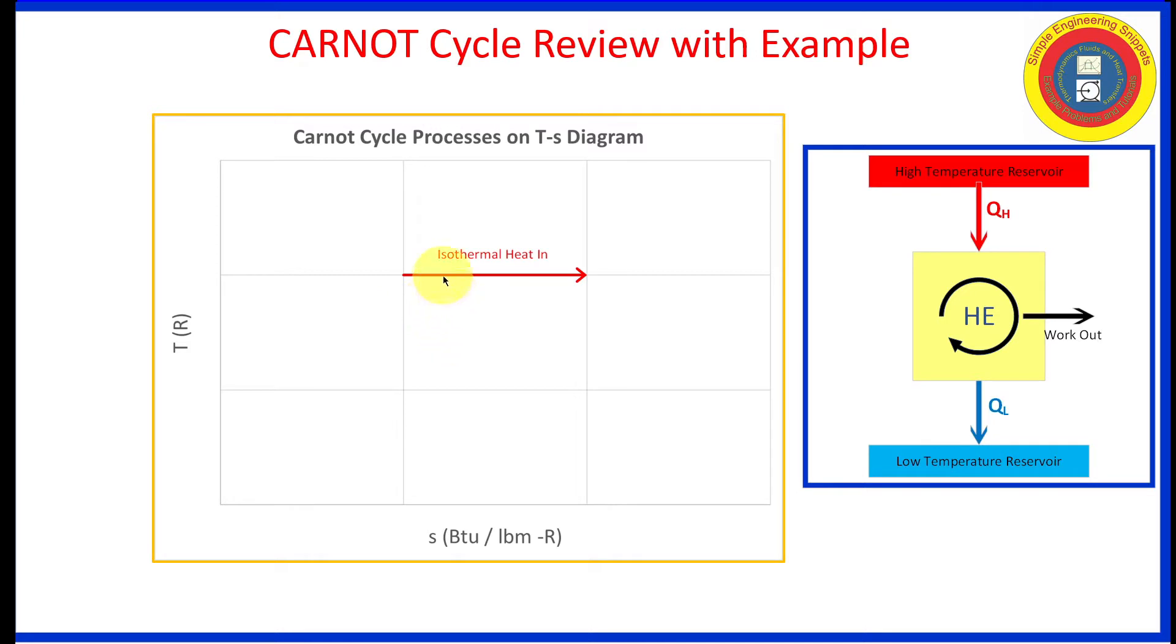TS is going to be a pretty useful type of diagram to visualize a Carnot cycle. So the first process is isothermal heat in. The Carnot cycle is an ideal cycle, and the most efficient way to use energy is to be able to transfer it in isothermally. The next process of the Carnot cycle is isentropic workout, and it's isentropic, so it is a perfect turbine, no friction, no energy losses.